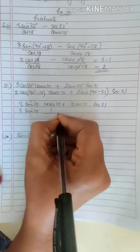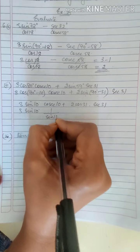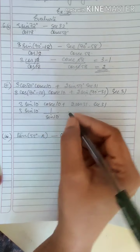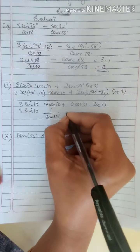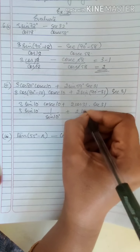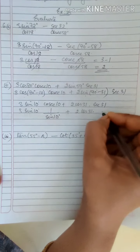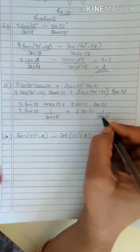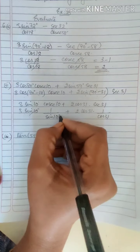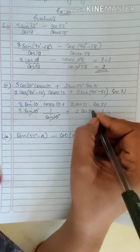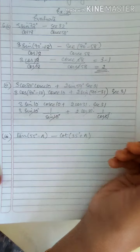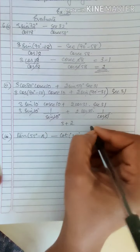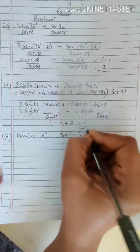Now 3 sin 10 cosecant 10 is 3 sin 10 into 1/sin 10, plus 2 cos 31 into 1/cos 31, because secant is the reciprocal of cos. Now sin 10 and sin 10 get cancelled, cos 31 and cos 31 get cancelled, so you get 3 plus 2 which is equal to 5.